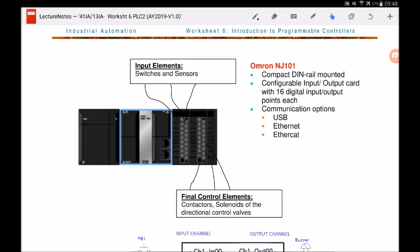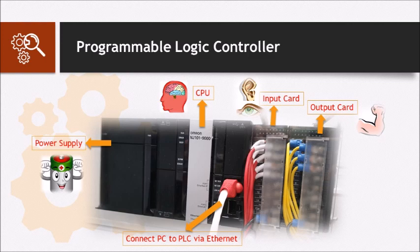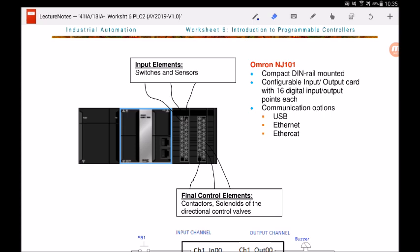We will now learn about PLCs and how to use them in the control chain. The PLC model we are going to use in the lab is the OMRON NJ101 series. We will teach programming instructions based on this model, which follows the industry standard IEC 61131-3. The OMRON NJ101 PLC has a power supply, CPU, input card, and output card. The input card is where you connect input elements such as sensors and switches, and the output card is where you connect the final control elements and output elements.